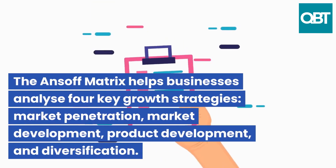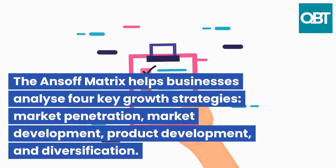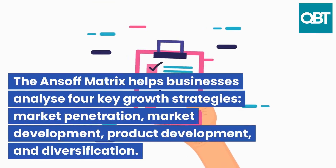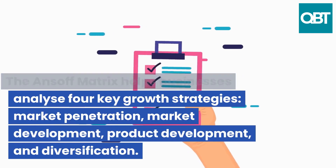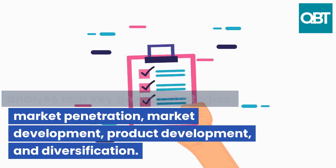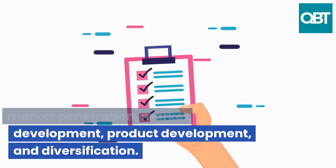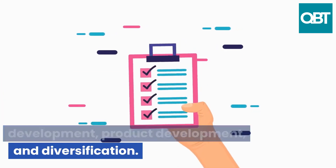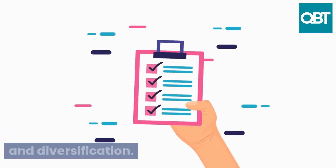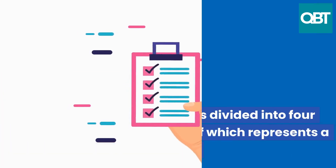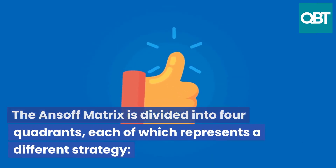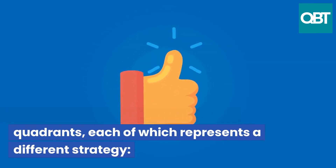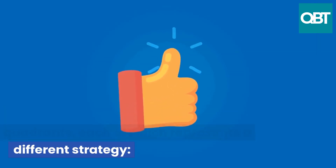The Ansoff Matrix helps businesses analyze four key growth strategies: market penetration, market development, product development, and diversification. The Ansoff Matrix is divided into four quadrants, each of which represents a different strategy.